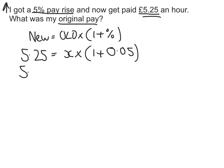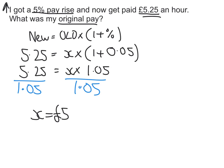So that's 5.25 equals x times 1.05. Now to solve that equation, I divide both sides by 1.05. The right hand side will just give me x, and if I do 5.25 divided by 1.05 in my calculator, I get £5. So my original pay was £5.